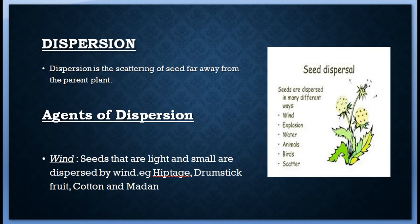Dispersal: Seeds need space to germinate and require air, water, and sunlight. Seeds disperse so that they get enough air, water, space, and sunlight to grow into a new plant. Dispersal is the scattering of seeds far away from the parent plant.